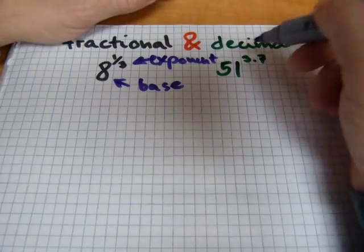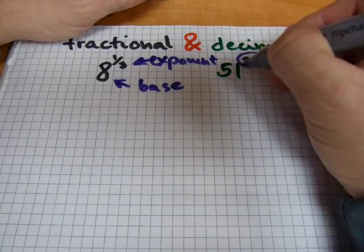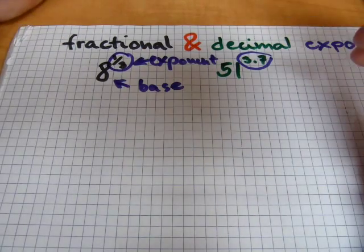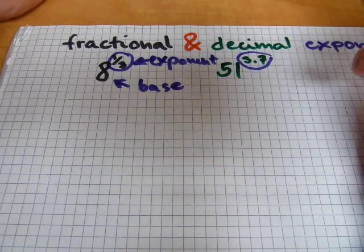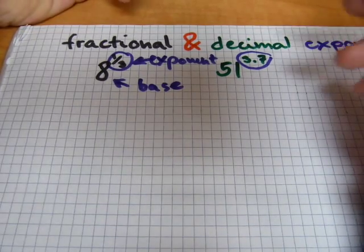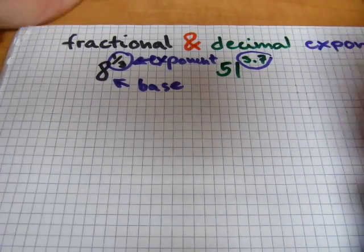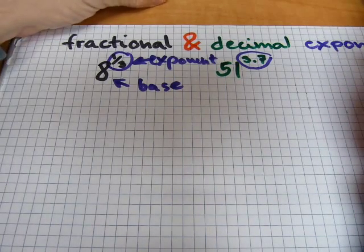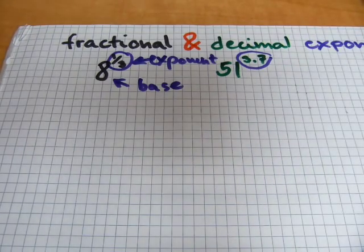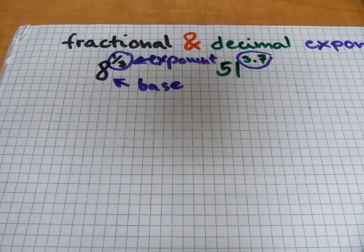Now, whether a number is in a decimal format or in a fractional format, it's still a number. It doesn't really matter which format it is. The ideas that worked in whole number exponents will work exactly the same way here.